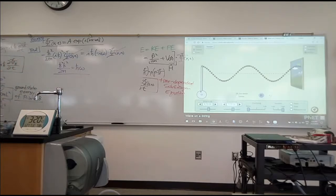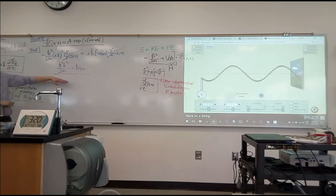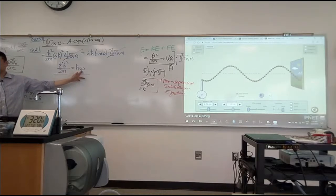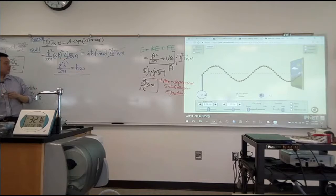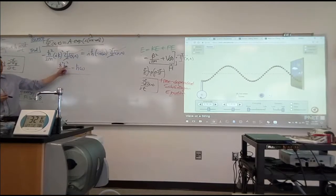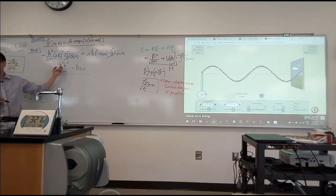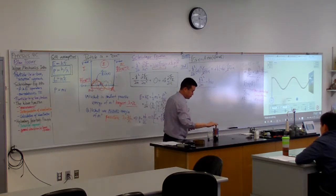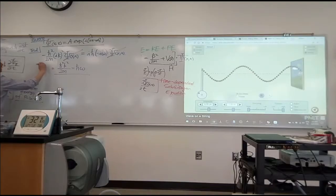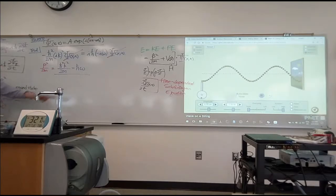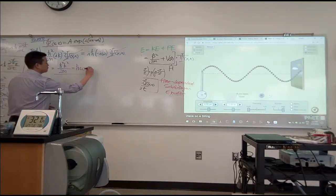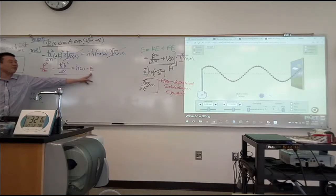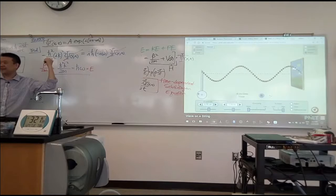Does this sound reasonable? ℏk equals h/λ, which is momentum p. So the left-hand side says p²/2m — that's kinetic energy. The right-hand side is ℏω = hf, which equals energy E. So kinetic energy equals energy — it's almost a circular argument because I knew that was the case going in.